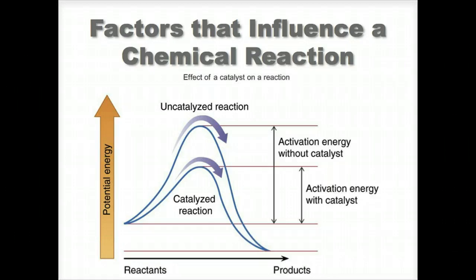For example, when the products of an incomplete combustion, such as aldehydes, are passed over fine particles of a transition metal catalyst in your car's catalytic converter, the reaction can take place readily at a lower temperature. In this way, more carbon dioxide and less toxic aldehydes are emitted. Another example of a catalyst is the ability of chlorine atoms to catalyze the destruction of ozone in the atmosphere.